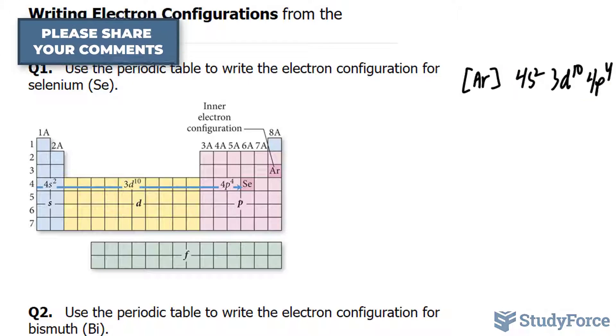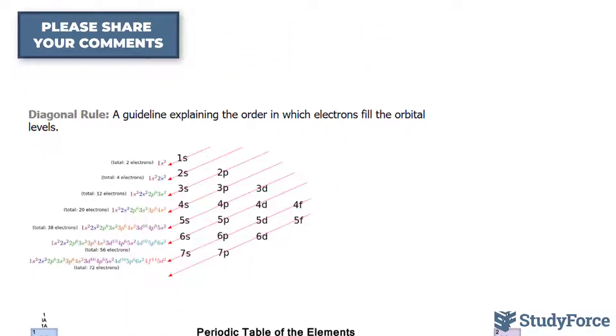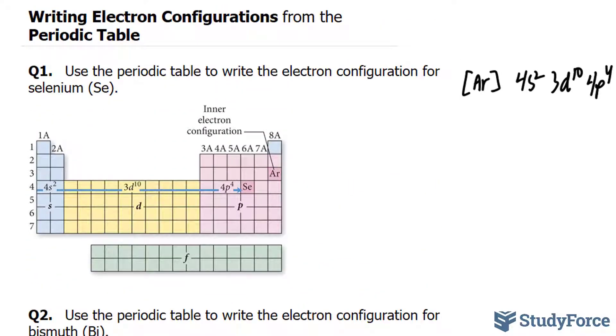The reason I wrote this in that order is the diagonal rule. The diagonal rule tells us the order in which the orbitals occur. After 4S comes 3D, 4P, and then the next one would have been 5S, but we don't need to go that far. That's the answer to question number 1. Let's try question number 2.